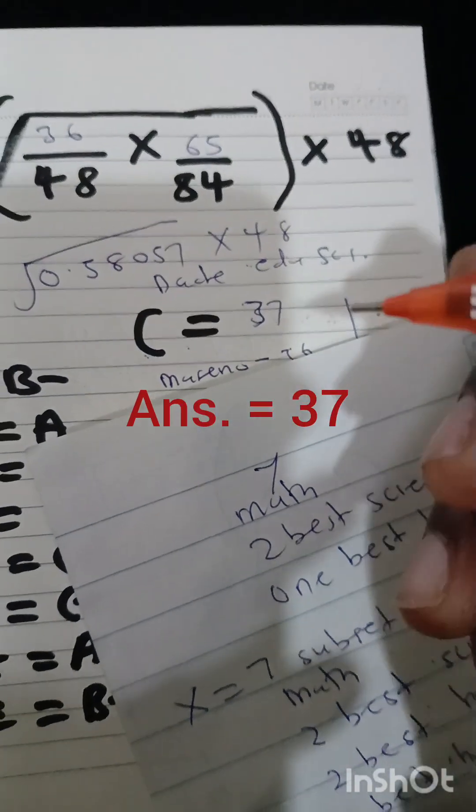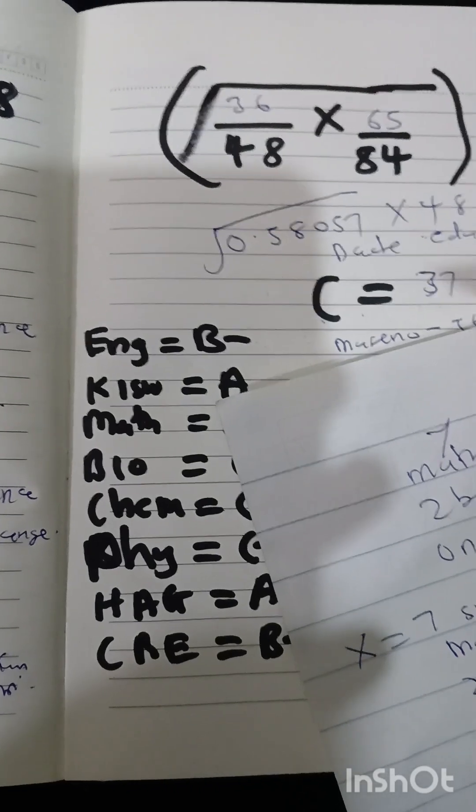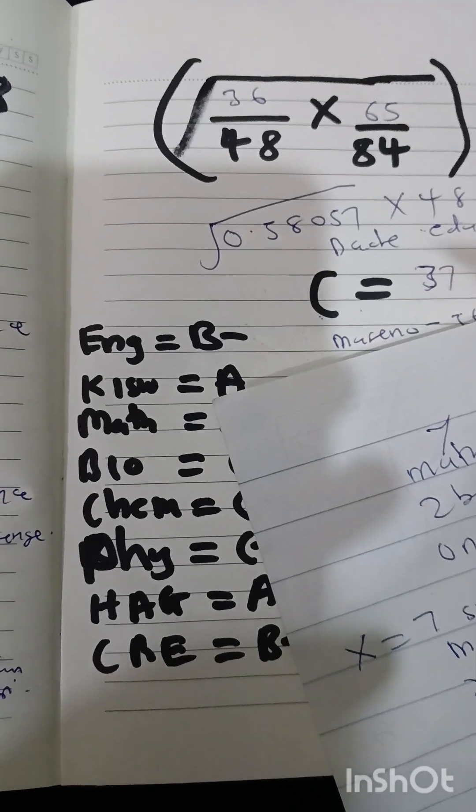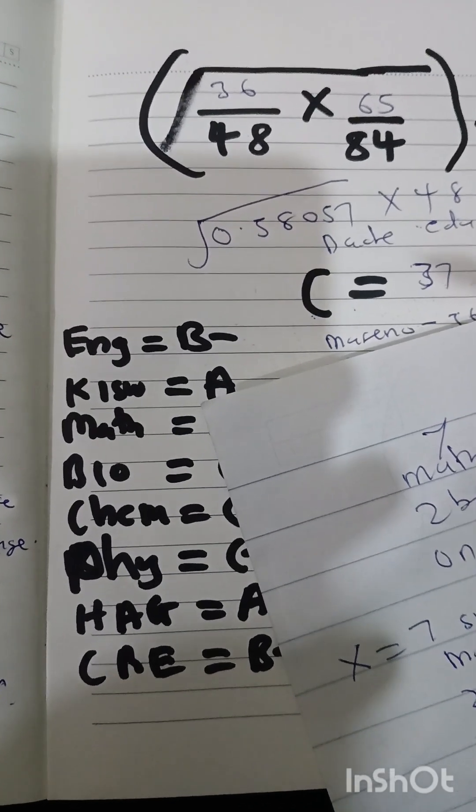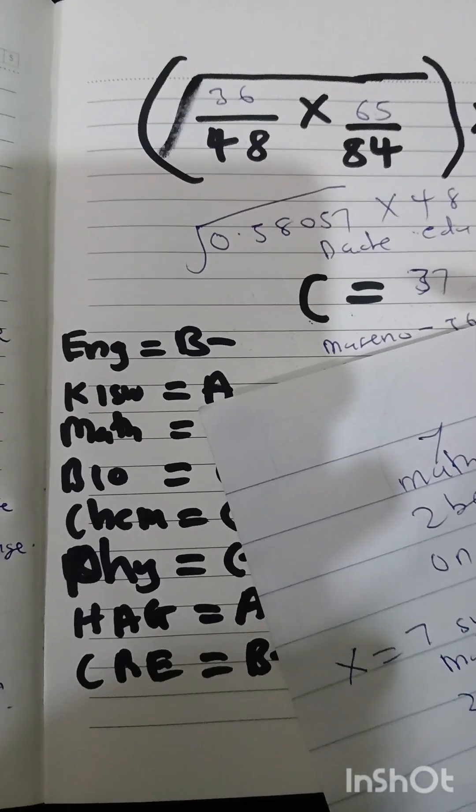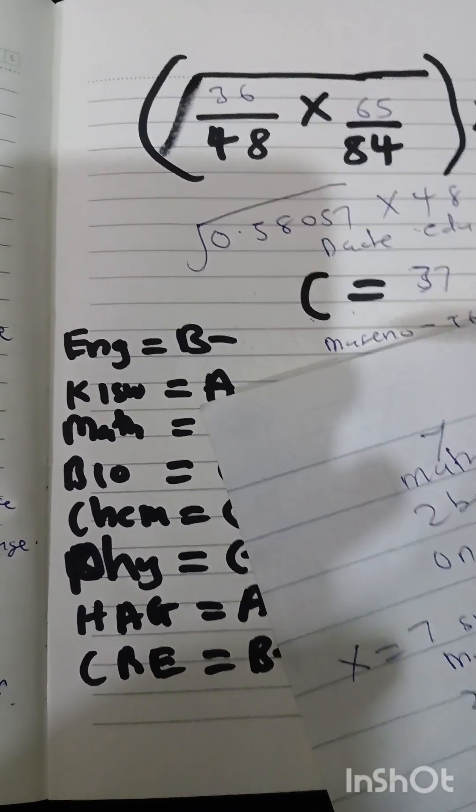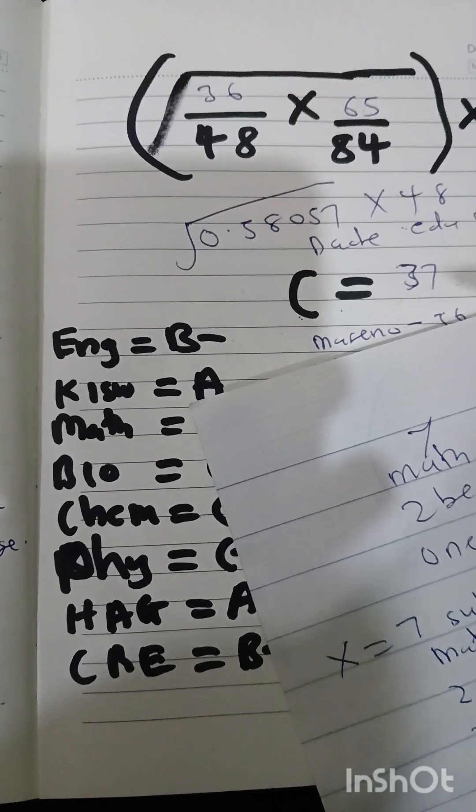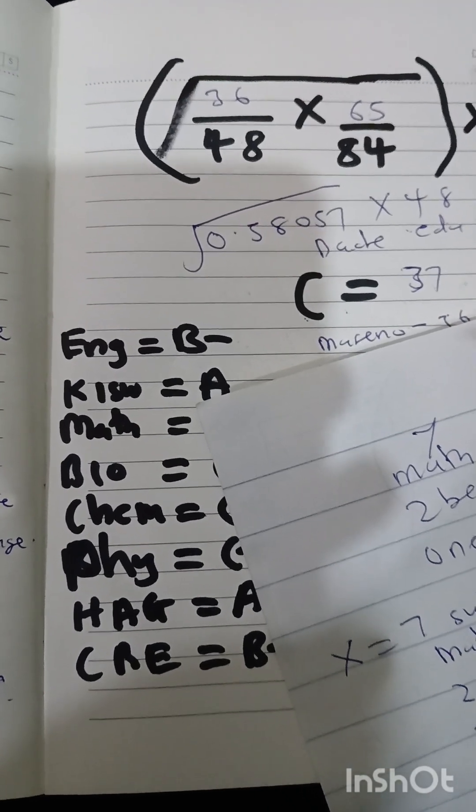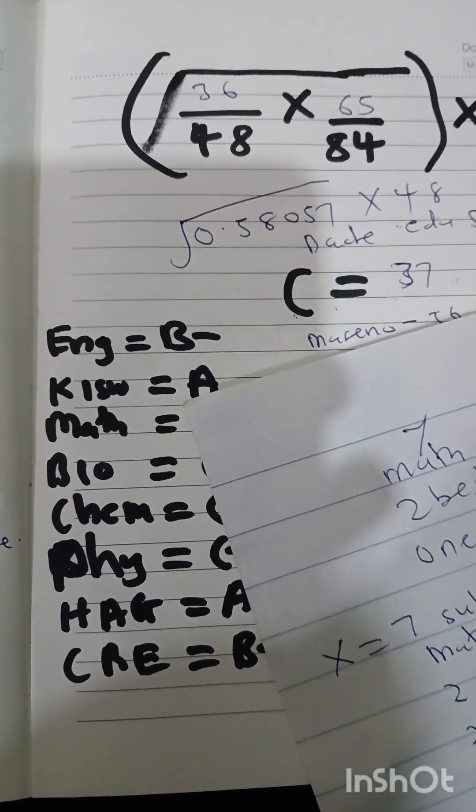So those are the cluster points of this student. On the CUSPS portal, they will always indicate the cluster weights of each student in each course or cluster. For example, if this student wants to apply for any medical related course, medical related courses are found in cluster 13.